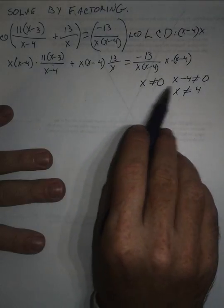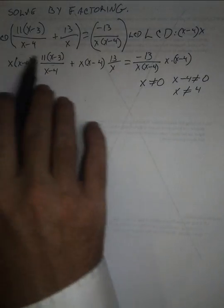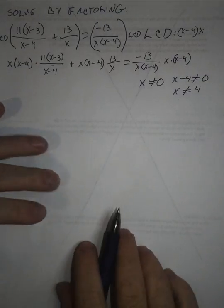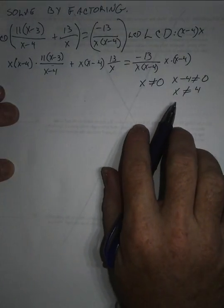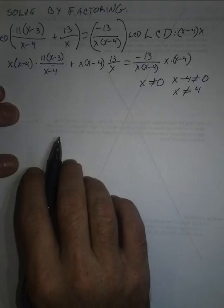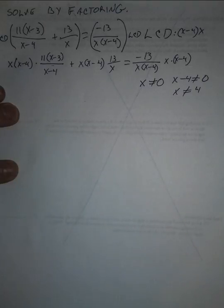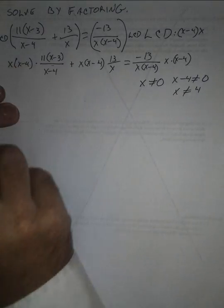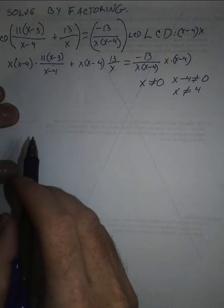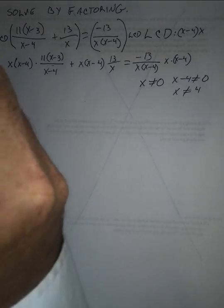If when we solve this thing, we end up with a 0 or 4, those aren't really solutions because that would make our original equation undefined. So once we've noted the domain restrictions, we can now cancel out terms that are in the numerator and denominator in order to simplify these rational expressions.